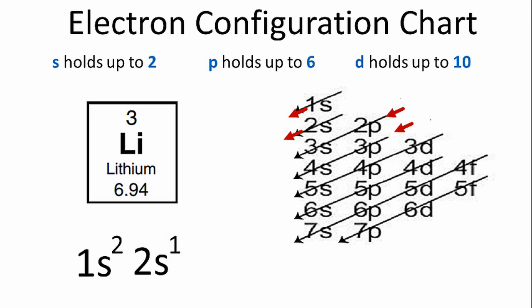If you add those up, two plus one, that gives us three, which is how many electrons we have for lithium. So that's the electron configuration for lithium.